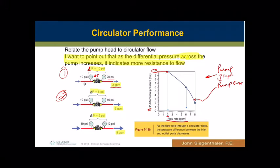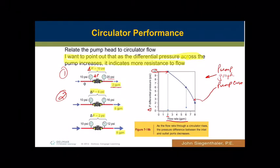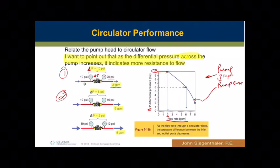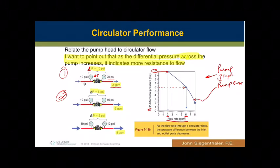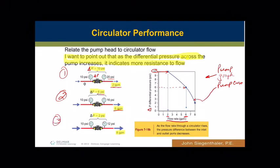The second point has a delta P of 6 PSI: 10 PSI going in, 16 PSI coming out. That tells me the pump has less resistance in the same system and would have more GPM. Looking at its pump curve, we go across until it intersects the curve and find that is six gallons a minute. Six GPM is the flow rate, and 6 PSI is the delta P.